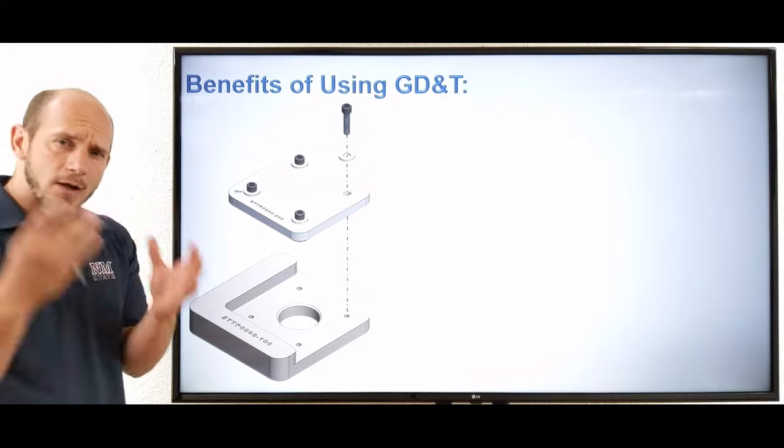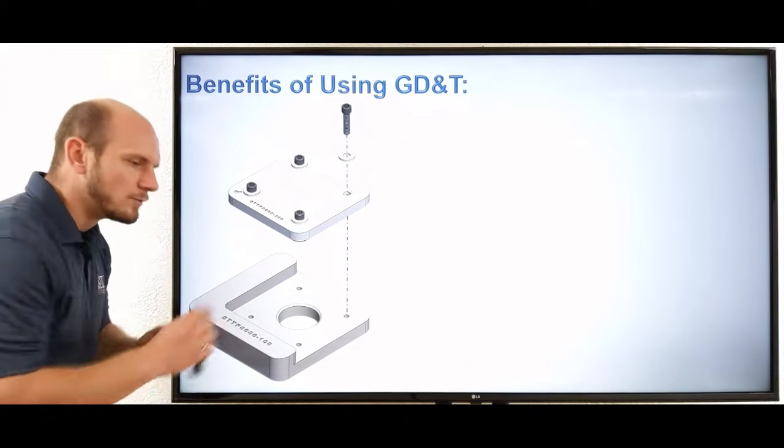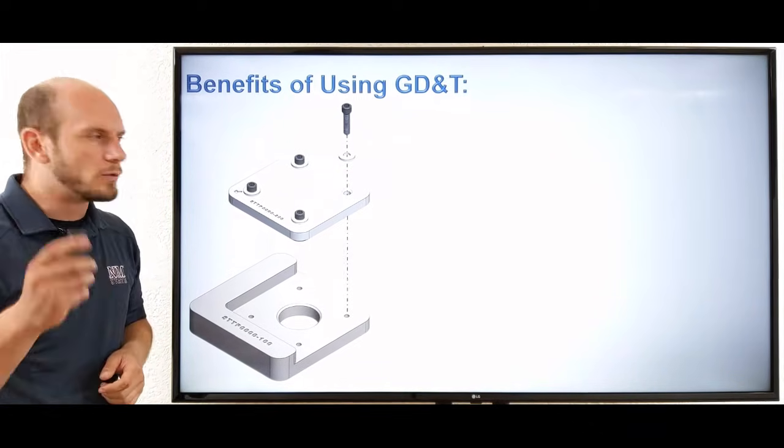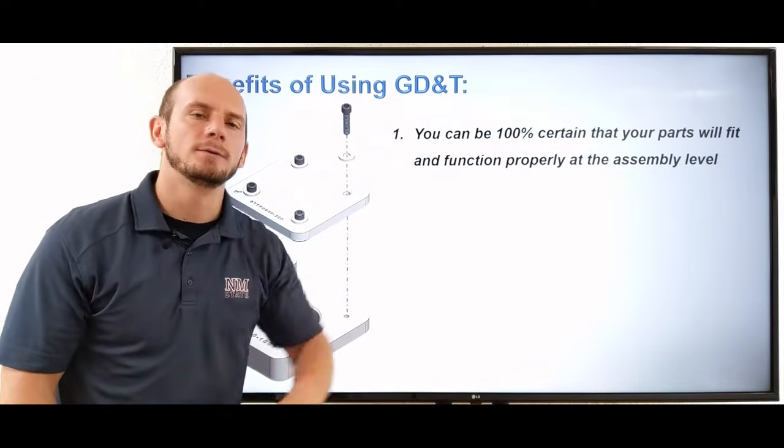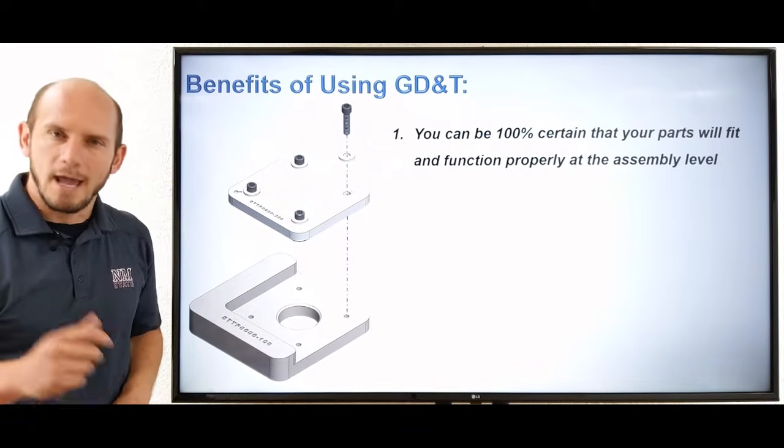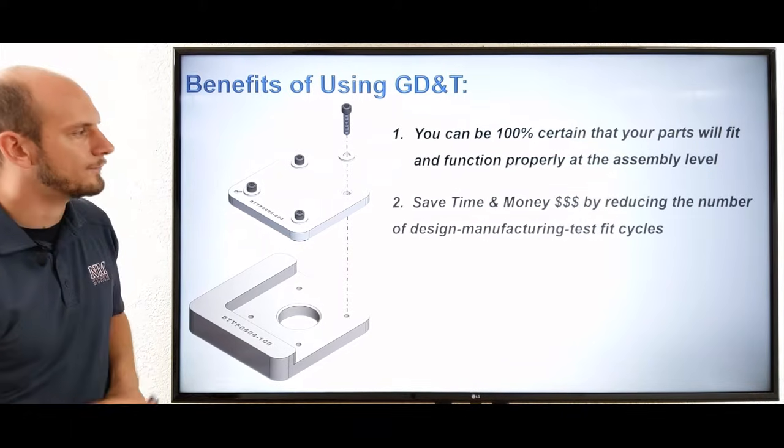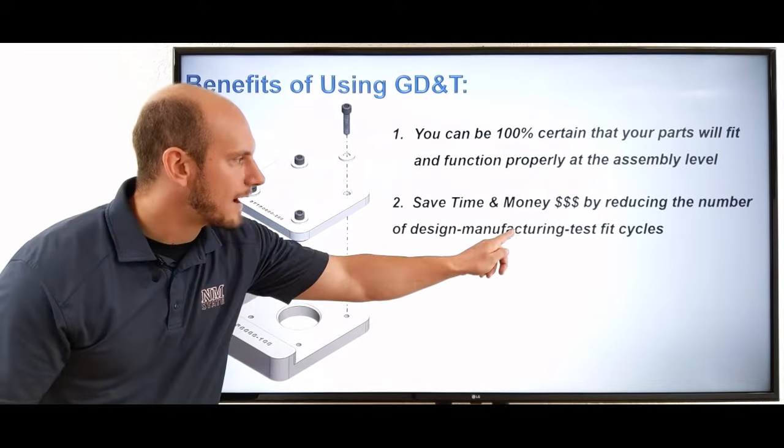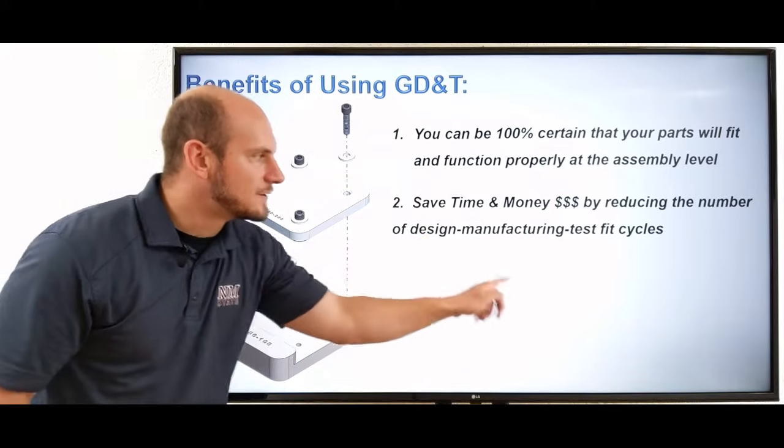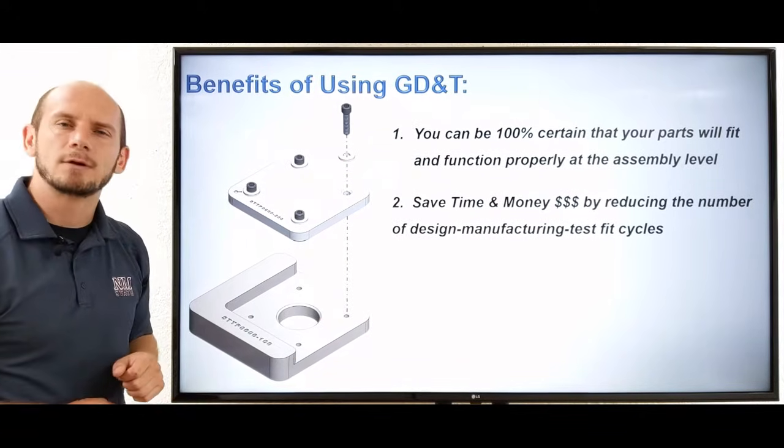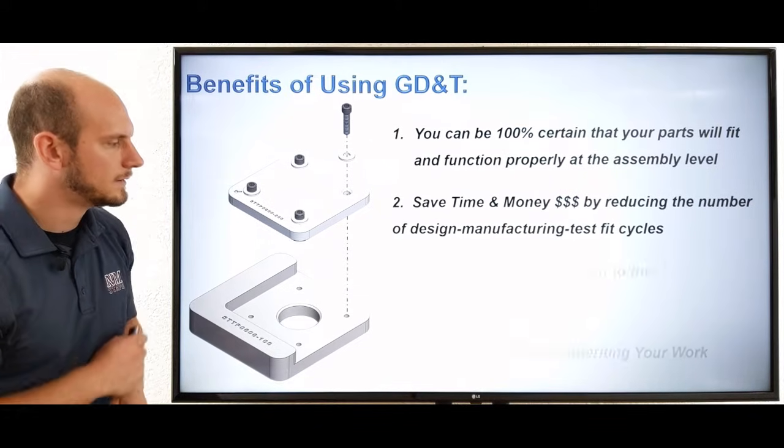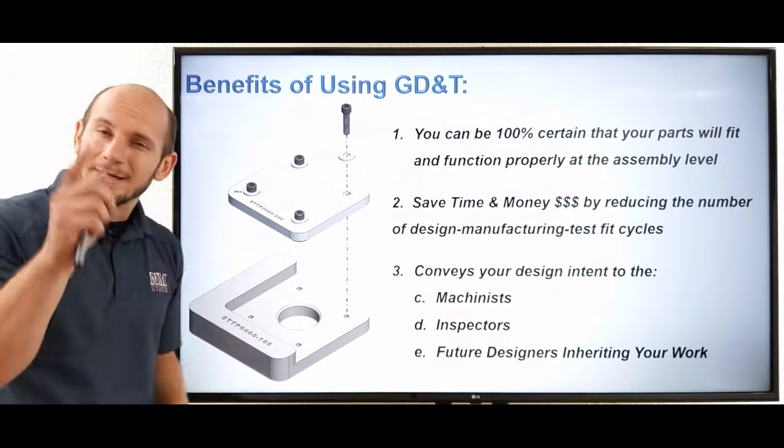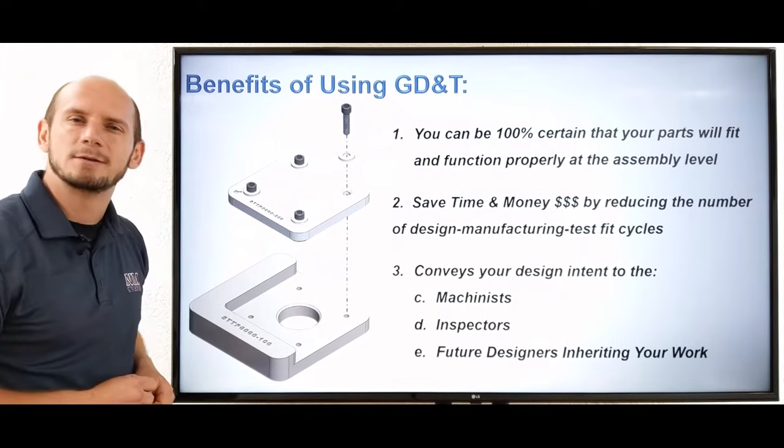All right, so now we know what GD&T is, kind of real briefly how it's used. What are the benefits of using GD&T? Or why should I use it? Well, number one, you can be 100% certain that your parts will fit and function properly at the assembly level. Number two, you're going to save time and money because you're going to reduce the number of design to manufacturing to test fit cycles that you have to perform because your parts are going to fit and function properly the first time around.